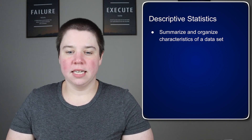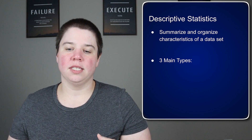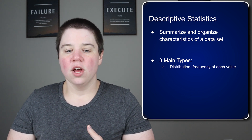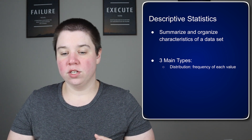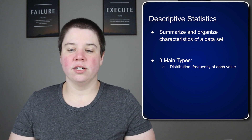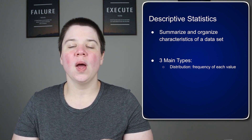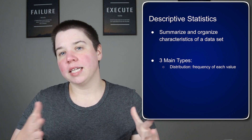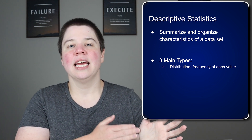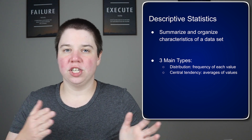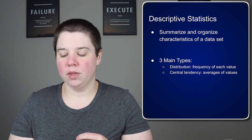For descriptive statistics, you're summarizing and organizing characteristics of a data set. There are three main ways that you do this. First, there's distribution, which is basically the frequency of each value. When you have continuous data, you can bin it — instead of listing 0, 0.1, 0.2 as all different values, you could say from 0 to 1 to show the distribution.